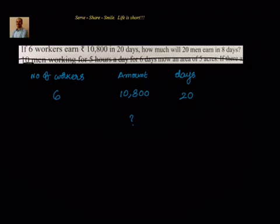How much will 20 men — that means number of workers are now 20 — earn in 8 days? This is what we have to find out. We know that if it is direct proportion and inverse proportion between 2 variables: in direct variation x1 by y1 equals x2 by y2, and in inverse variation x1 into y1 equals x2 into y2.